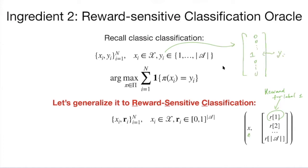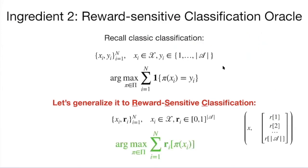The objective function is to find a classifier that achieves the highest total reward across training examples — map from feature to a label, look at the associated reward for that label, sum over all examples. Classic classification is a special instance of reward-sensitive classification where the reward vector is a one-hot vector.